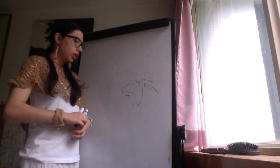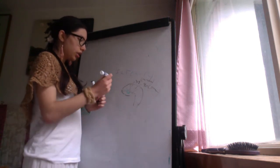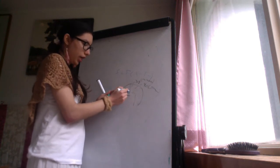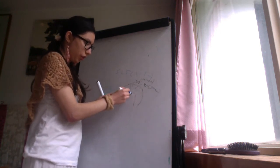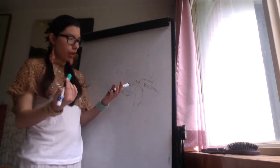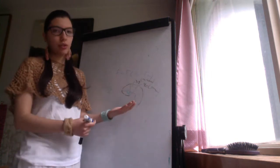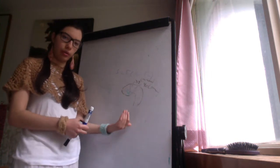So the longitudinal fascicle is connecting Wernicke's area and Broca's area. This is the superior longitudinal fascicle. But because Wernicke's area sometimes involves the parietal lobe, damage to the parietal lobe can result in conductive aphasia.